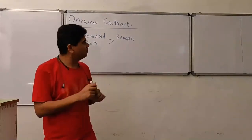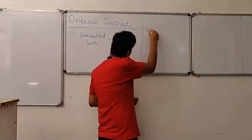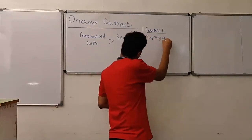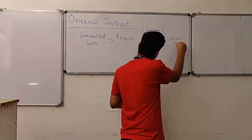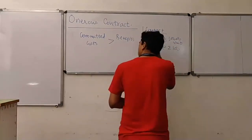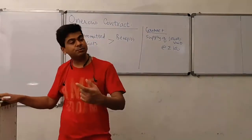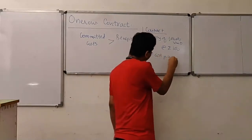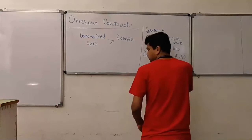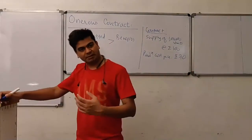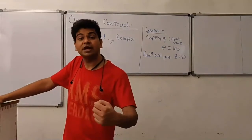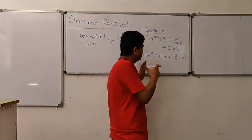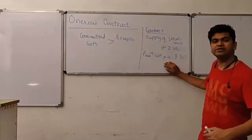For example, let us say you are entering into a contract for the supply of 1 lakh units at the rate of ₹100. When you sign this contract, your production cost per unit is ₹70. So you will be producing at ₹70 and selling for ₹100, seeing a profit potential of ₹30 per unit. Naturally, since there is profit potential, you will want to execute this contract.